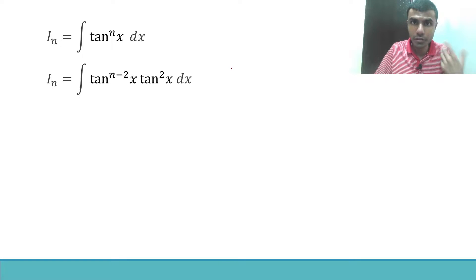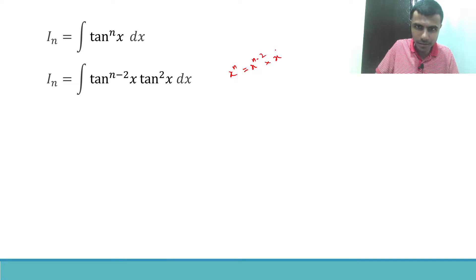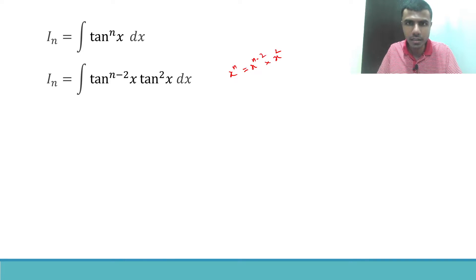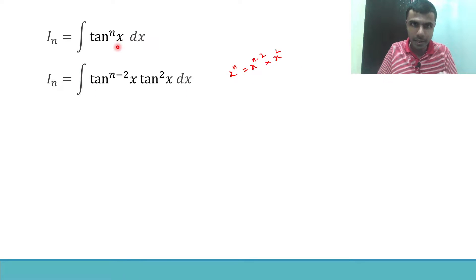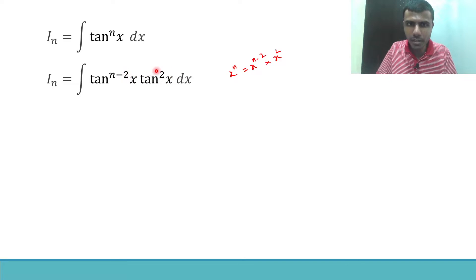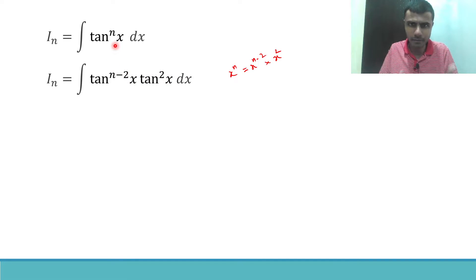In case you have not seen the previous video: x^n can be written as x^(n-2) · x². That's why tan^n x can be written as tan^(n-2) x into tan² x — the powers add up and you're left with the same thing.